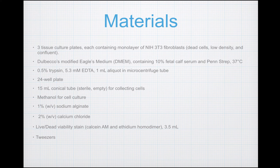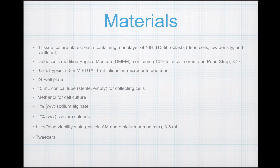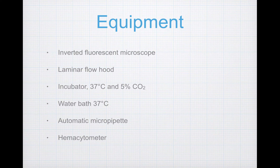The materials for this lab: each group will receive three tissue culture plates containing a monolayer of NIH 3T3 fibroblasts, cell culture medium, trypsin, a 24-well plate, a 15-milliliter conical tube for collecting cells, methanol graded for cell culture, a 1% solution of sodium alginate, a 2% solution of calcium chloride, a live-dead viability stain in a quantity of 3.5 milliliters, and a pair of tweezers. For equipment, you'll need an inverted fluorescent microscope, a laminar flow hood, an incubator kept at 37°C with 5% CO2, a water bath at 37°C, automatic pipettes, and a hemocytometer.